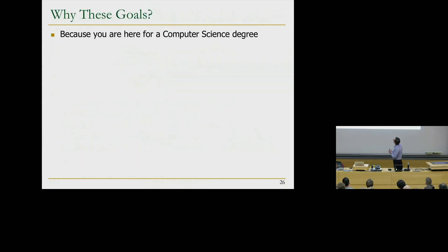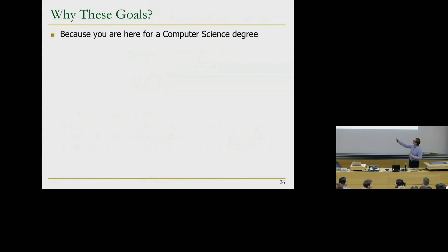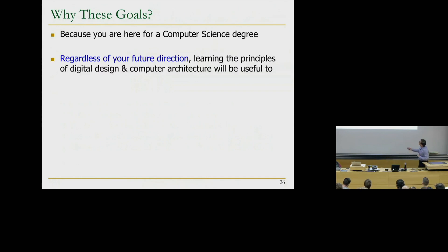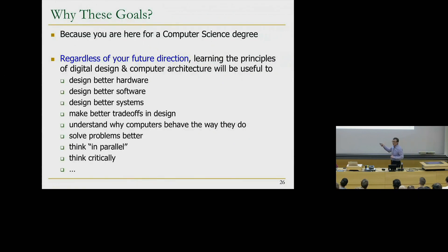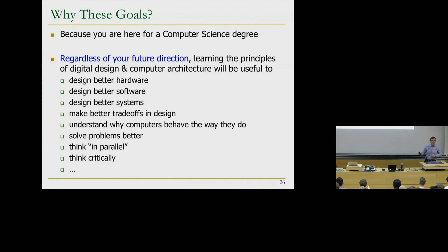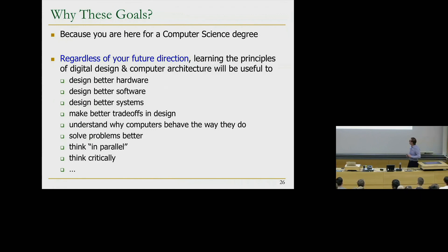Why these goals? Hopefully because you are here for a computer science or electrical engineering degree — it's really a continuum. Regardless of your future direction, learning the principles of digital design and computer architecture will be useful to design better hardware, design better software — because once you understand the hardware, you can do much better with software — and design better systems in the end. Algorithm-architecture co-designs are something we talked a lot about yesterday. You can make better trade-offs in design, and hopefully better trade-offs in other designs out in the world — a tram, for example. You can understand why computers behave the way they do, and solve problems better.